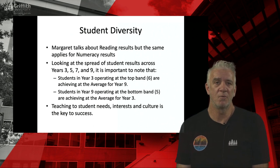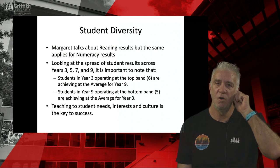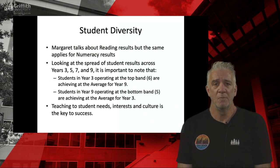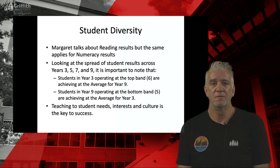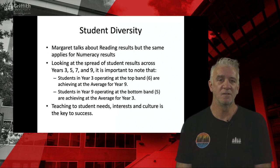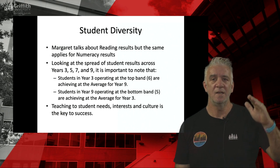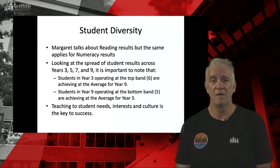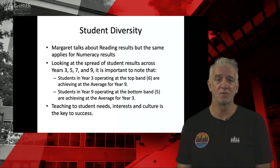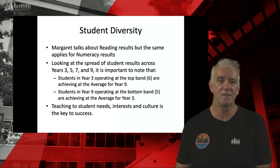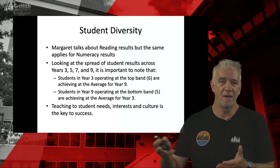Margaret Wu also talks about the range of student diversity. Sometimes you'll get a child come into a class in year five who is already operating at a year six level. Kids' learning doesn't go on a nice steady trajectory — it can go up and down, and test results can certainly fluctuate based on a whole range of factors, including whether they had a difficult morning at home. But teaching to students' needs, interests, and culture is the key to success — connecting where students are and taking them forward from where they're at.